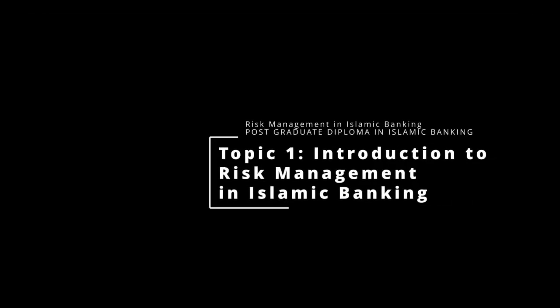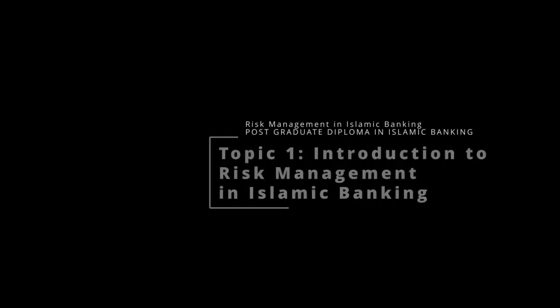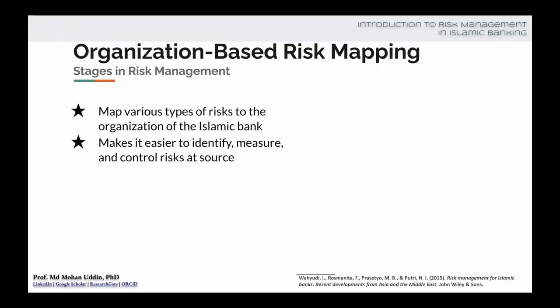I have mentioned about risk mapping — different parts of the organization may be exposed to different types of risk. That should be mapped and clearly identified, and that will help us to alert a particular part of the organization about specifically the dominant type of risk they will face.